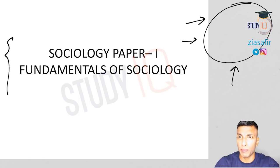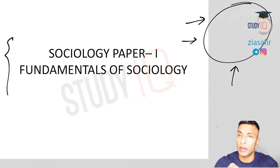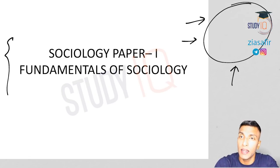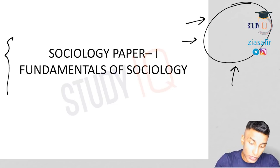Let's get started with the sociology syllabus. We'll cover paper one first, then paper two. The main difference between them is that you may see the same topics in both — politics, family, kinship, religion, social change — but paper one is all about conceptual understanding at the international level, whereas paper two is at the Indian level with more application.